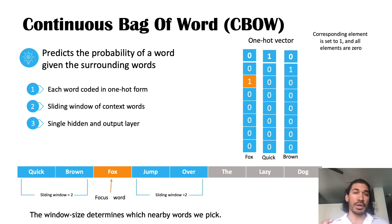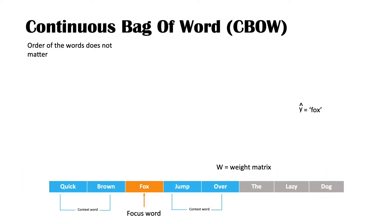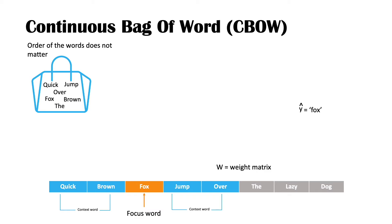We feed this one-hot encoded vector into a simple neural network with one hidden layer and one output layer. The window size determines the nearby words we pick. Our focus word is fox, which we are trying to predict, and our context words are the four words on each side with a sliding window of two. The reason it's called 'continuous' is because we get continuous numeric representations at the end, and 'bag of words' because the order of the words doesn't matter. Our main goal is to get the maximum probability of the focus word fox given all the surrounding context words.